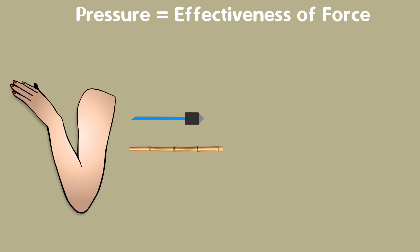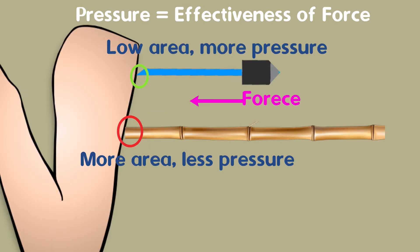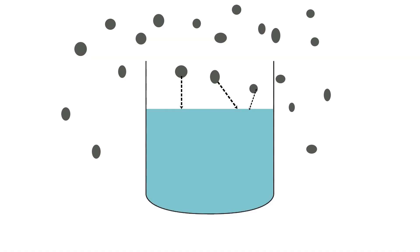For example, a needle penetrates our skin easily compared to a wooden stick if the same amount of force is applied. This happens because, in the case of the needle, pressure is more as the area is less. Here the force is more concentrated compared to a stick and thus force is more effective.